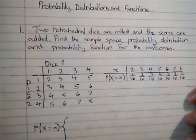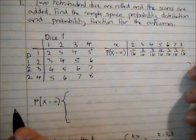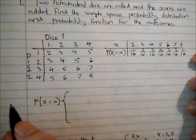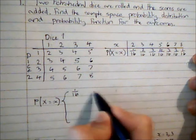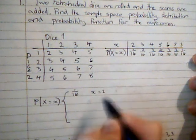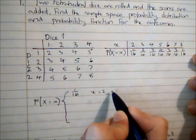Because what probabilities have I got? Well, a probability of 1/16 occurs when x equals 2 or x equals 8.